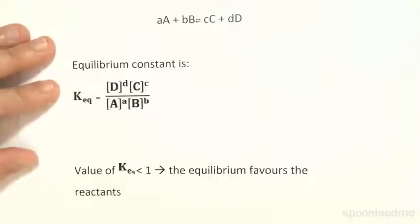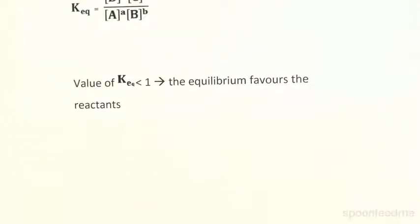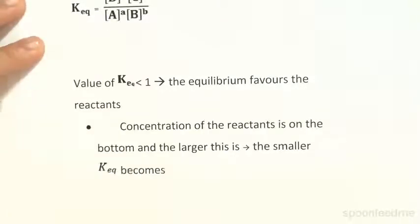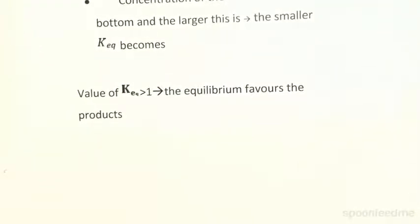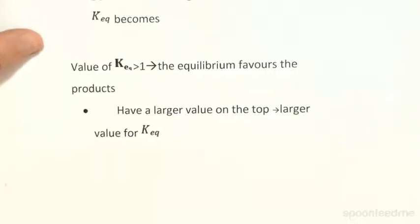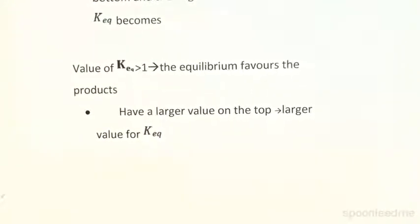If we have a small value for our equilibrium constant — that is, a value less than 1 — then the equilibrium favours the reactants. This makes sense because the concentration of the reactants is on the bottom, and the larger it is, the smaller Keq becomes. Conversely, if we have a large equilibrium constant value greater than 1, then the equilibrium favours the products, because a larger product concentration on top gives a larger Keq.